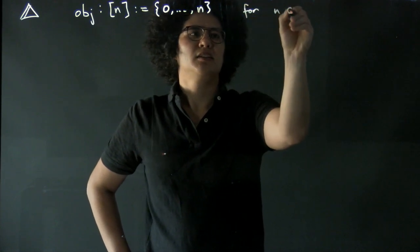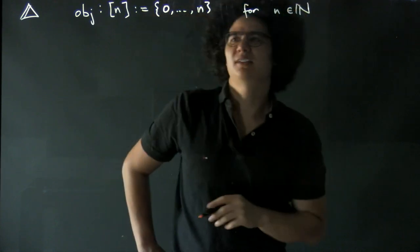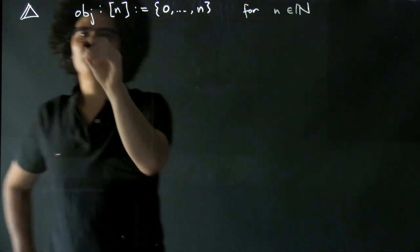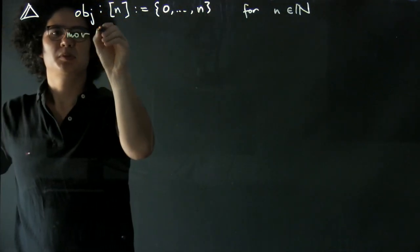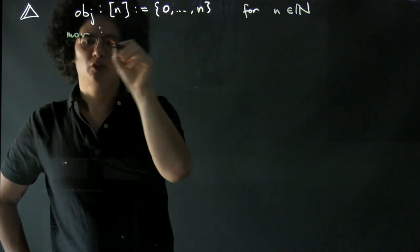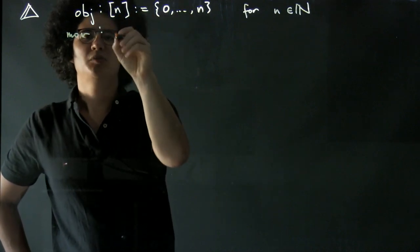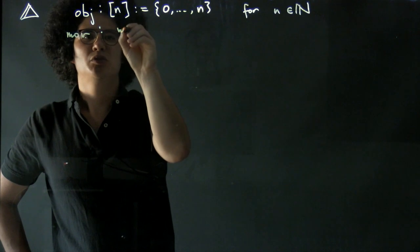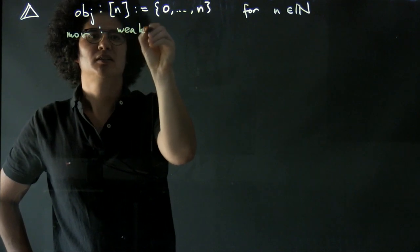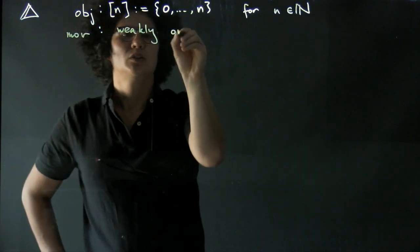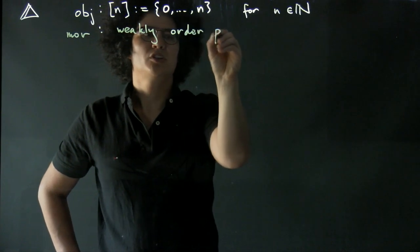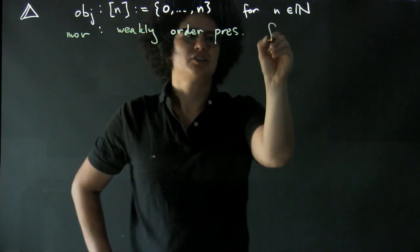For n, a natural number, again we're counting zero as a natural number. And the morphisms between these sets, these totally ordered sets, are going to be weakly order-preserving functions.